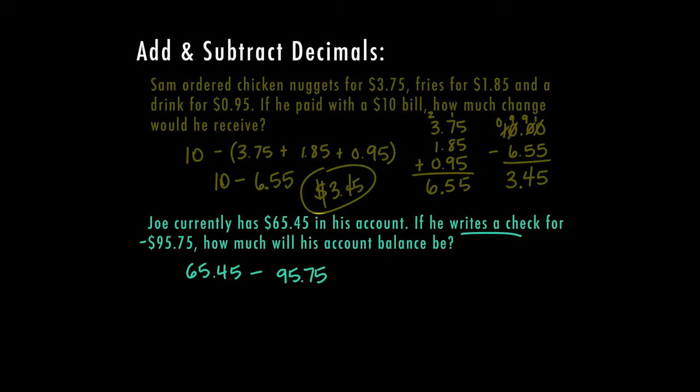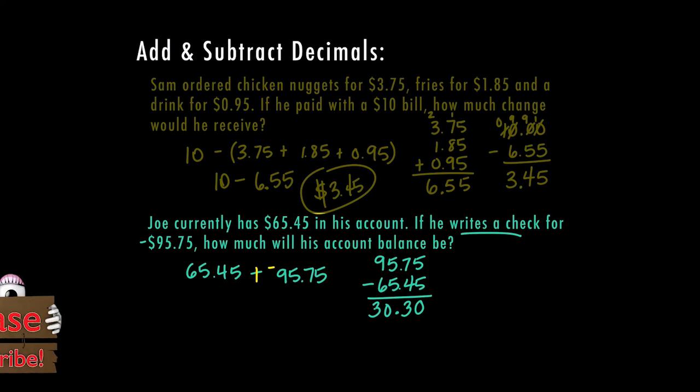But we can rewrite this into an addition problem. If you don't like subtracting the larger number and you like it to look like a negative, you can rewrite this to add the opposite. So then we would end up with $65.45 plus a negative $95.75. But either way you like to do this, we do know we have to subtract these numbers. And since we're subtracting, we need the larger absolute value on top. So I am going to line this up with 95.75 minus 65.45. And then I can go ahead and subtract my numbers. So 5 minus 5 is 0, 7 minus 4 is 3, bring down my decimal, and 9 minus 6 is 3.